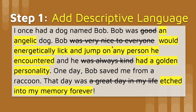We've got the words 'very' and 'nice' — banned words, very boring. So instead I said he would energetically lick and jump on any person he encountered. Instead of 'kind,' which is again kind of general, we say he had a golden personality. I went through and looked for these banned words, like 'great,' and replaced them with words that are more descriptive and paint this picture. That was my first step.